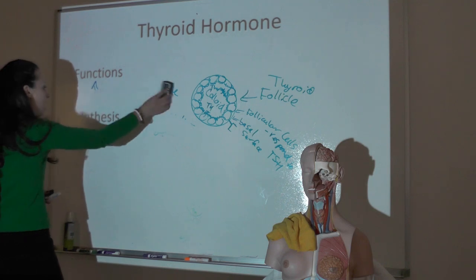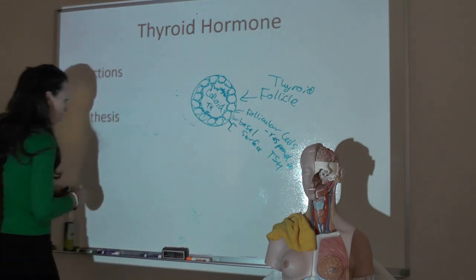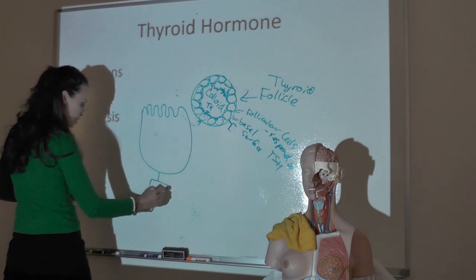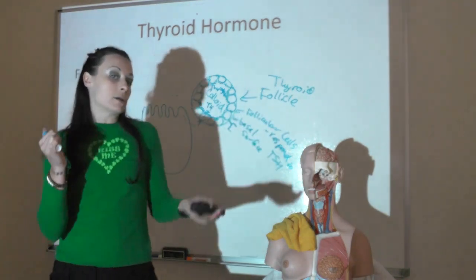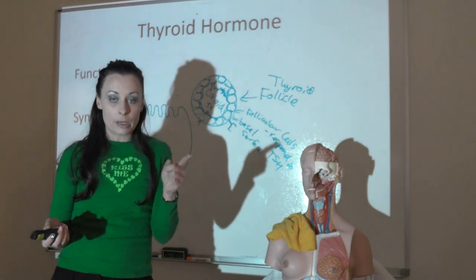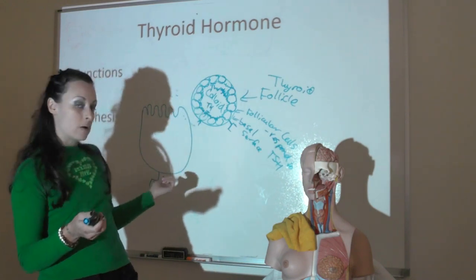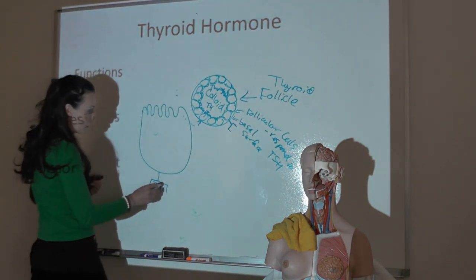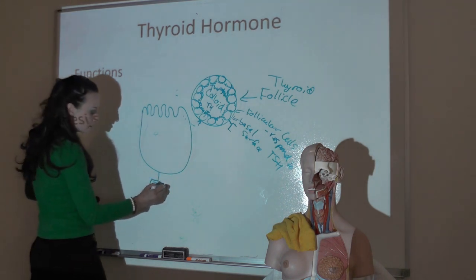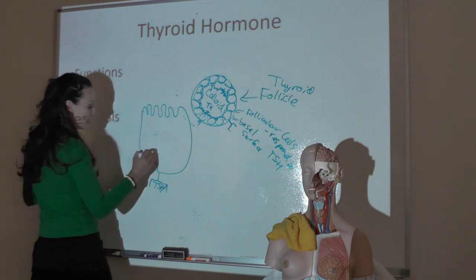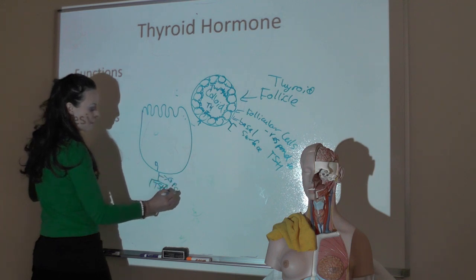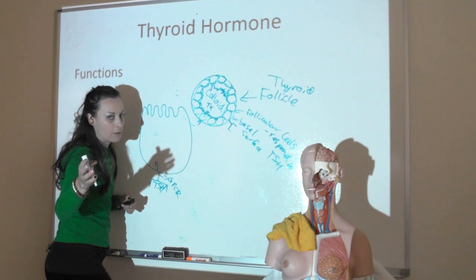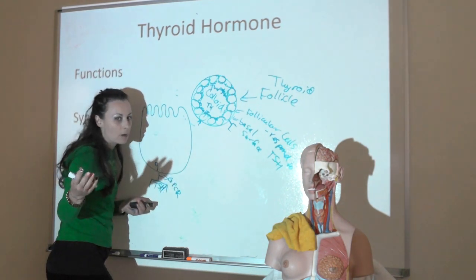Thyroid hormone synthesis is interesting because it's synthesized extracellularly in the colloid. Zooming into one follicular cell: there is a TSH receptor on the basal surface. TSH is water-soluble because it's a peptide from the anterior pituitary, so it binds an extracellular receptor. When it binds, it initiates a second messenger cascade—the TSH receptor is a G-protein coupled receptor—activating production of a second messenger that drives all downstream events.